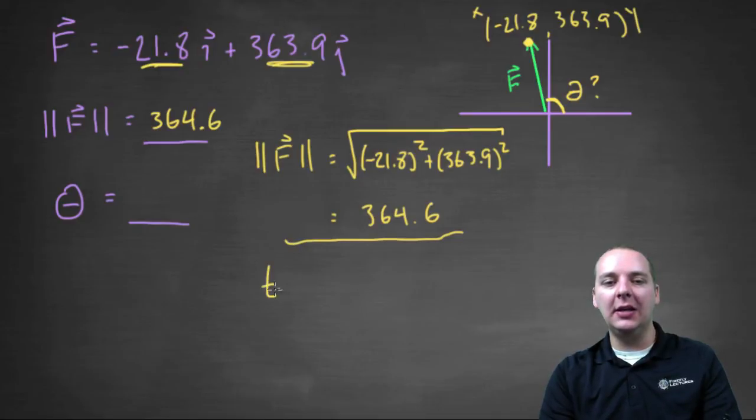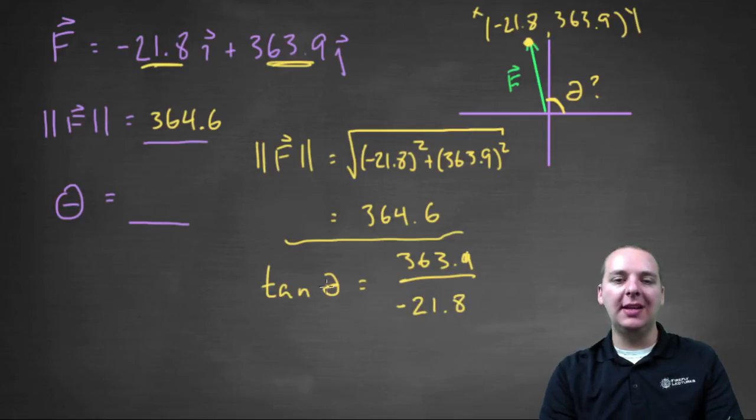So we could say tangent of what angle would give you y over x, right? Opposite over adjacent, as you remember from your pre-calculus days. Now to get your theta, you would take the arc tangent of whatever this ratio is. And I went ahead and did this before I recorded the video again just to save a little time. And I got a weird answer, so I want you to think about this. I got negative 86.6.